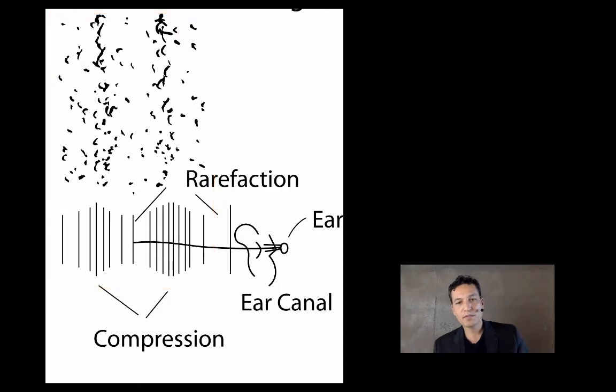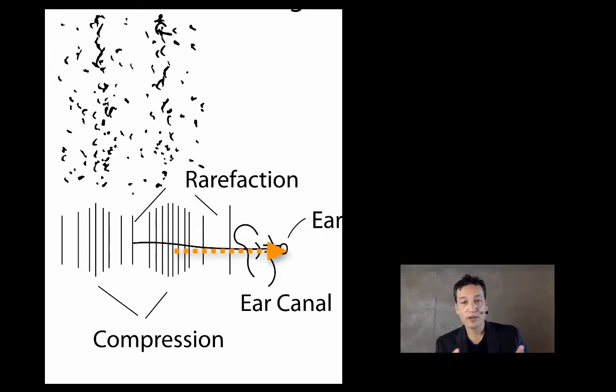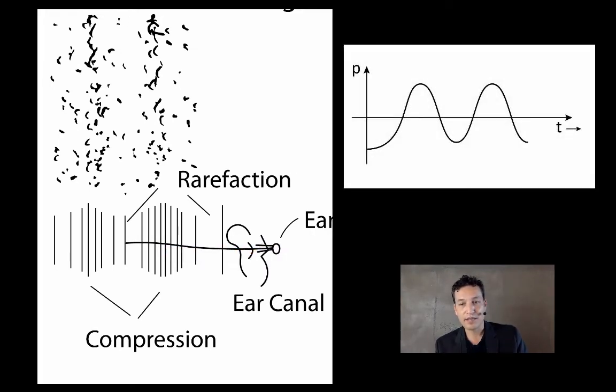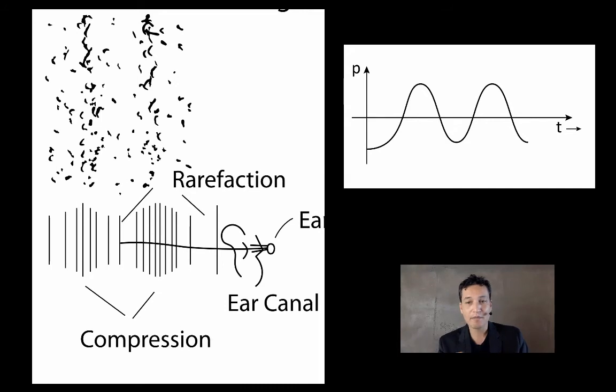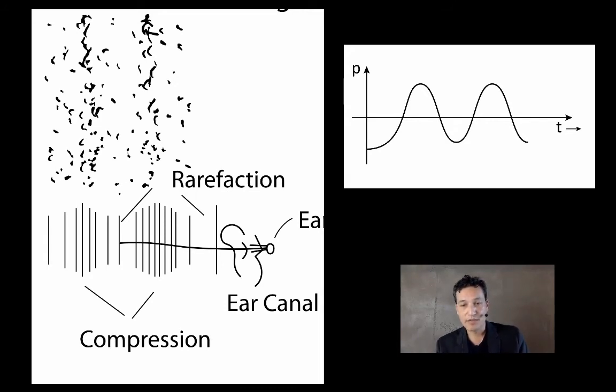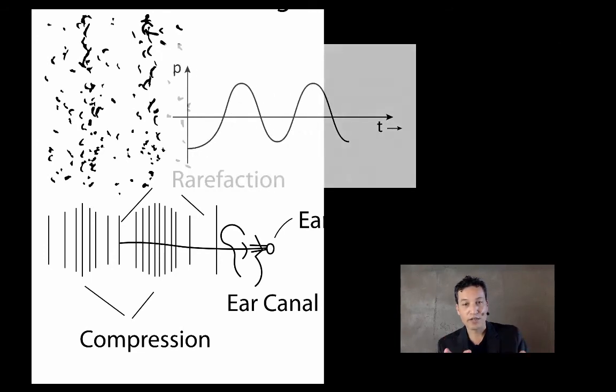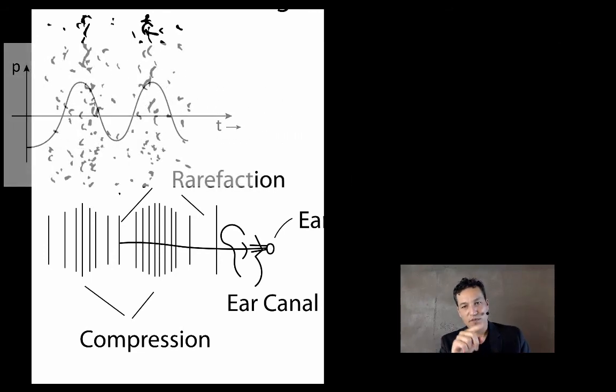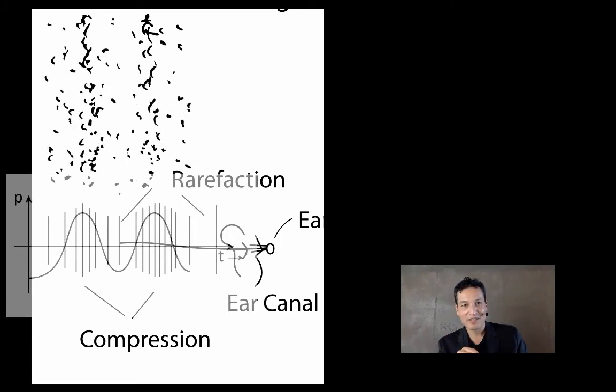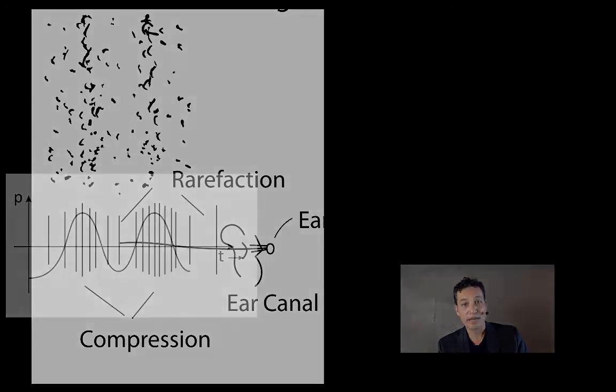Those pressure changes travel over into the ear. They go through the ear canal and then hit the eardrum. If we look at the figure again that's in the time domain, time is on the horizontal axis, pressure is on the vertical axis. You'll see there is a correspondence between the movement in the signal and what's depicted in the dots and the lines that represent compression and rarefaction.